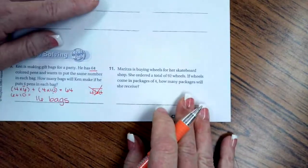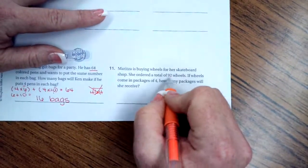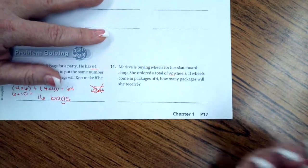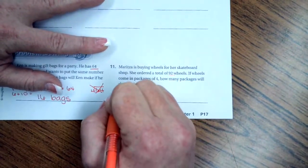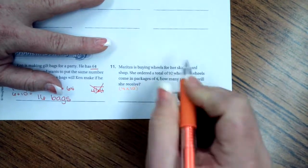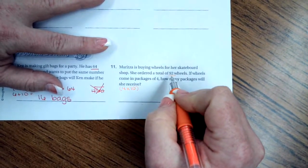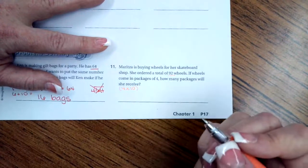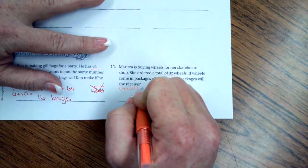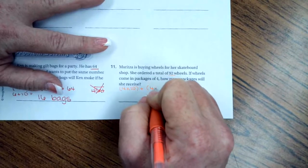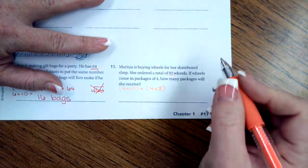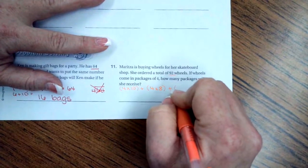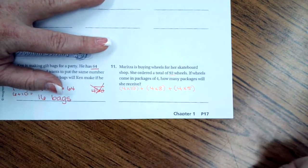All right, Maritza is buying wheels for her skateboard shop. She ordered a total of 92 wheels. If the wheels come in packages of 4, how many packages will she receive? So I'm going to say 4 times 10 is 40. If I take 40 away from 92, I'm left with 52. And again, I don't know how many times 4 goes into 52, but I know that 4 times 8 is 32.